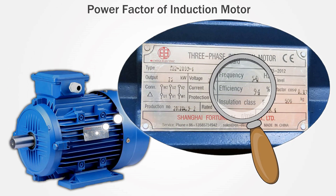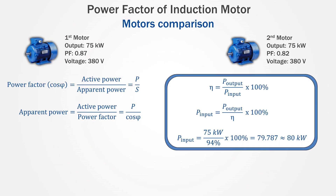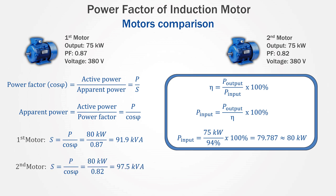Let's take a look at the nameplate of the induction motor one more time and check the efficiency of the motor. The efficiency of the motor is 94%. Substituting the values into the formula, we get the input power. The first motor will need to draw 91.9 kW from the power supply system to provide 75 kW of power. And the second motor will need to draw 97.5 kW from the power supply system to provide the same 75 kW of power.